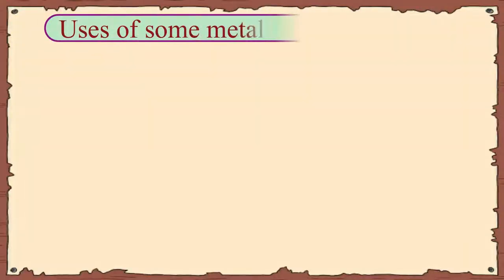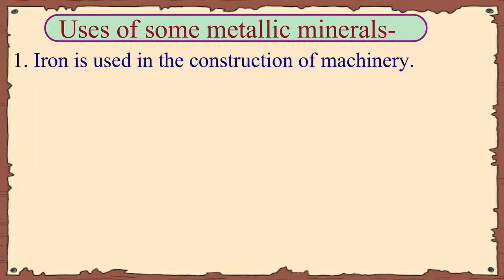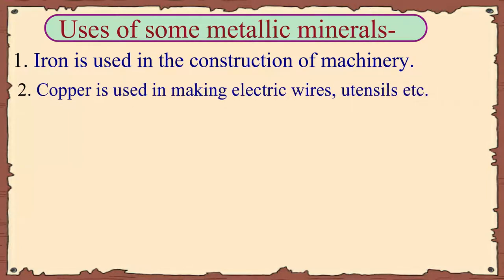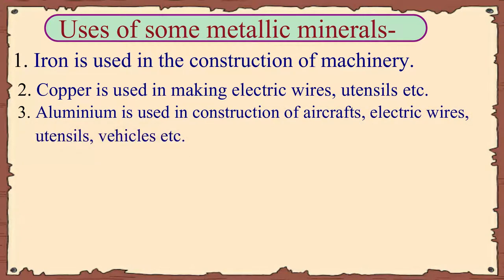Let us know the uses of some metallic minerals. Iron is used in the construction of machinery. Copper is used in making electric wires, utensils, etc. Aluminium is used in construction of aircrafts, electric wires, utensils, vehicles, etc.